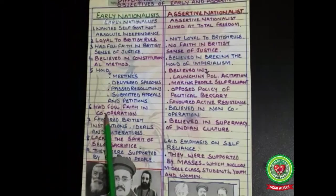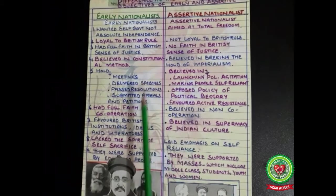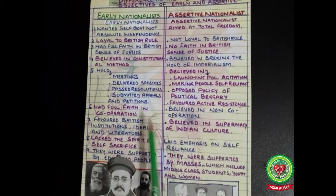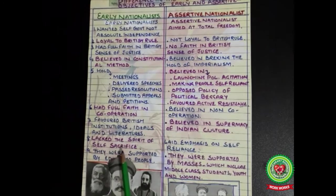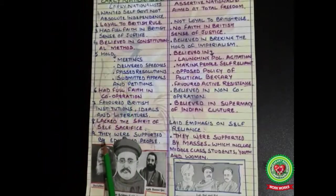Early nationalists had full faith in cooperation; assertive nationalists believed in non-cooperation. Early nationalists favored British institutions, ideals, and literature; assertive nationalists believed in the supremacy of Indian culture. Early nationalists lacked the spirit of self-sacrifice; assertive nationalists laid emphasis on self-reliance. Early nationalists were supported by educated people; assertive nationalists were supported by the masses, including the middle class, students, youth, and women.